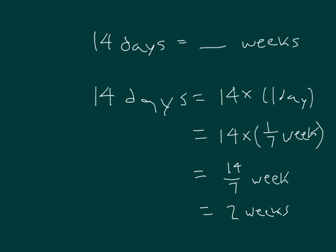14 over 7, 14/7 is equal to 2 weeks. You can think of the 14 divided by 7.